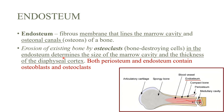Osteoclasts determine the size of the marrow cavity and the thickness of the diaphyseal cortex. If osteoclasts are overactive, bones can become fragile because the outer cortex isn't thick enough. If they are underactive, there isn't enough space for the marrow. Everything needs to be balanced to keep bones in their best shape. Both the periosteum and endosteum contain both types of cells — osteoblasts and osteoclasts.